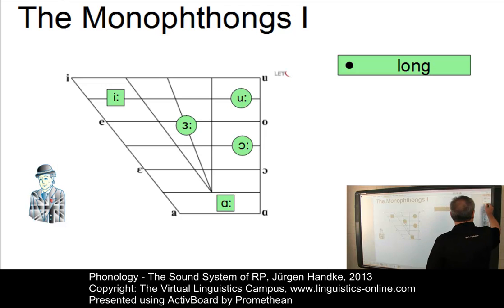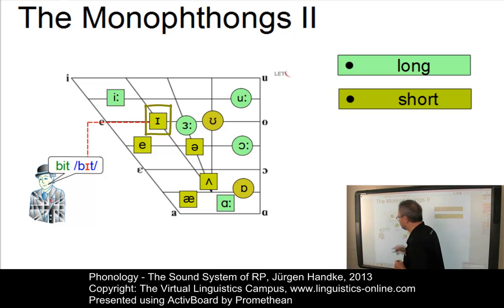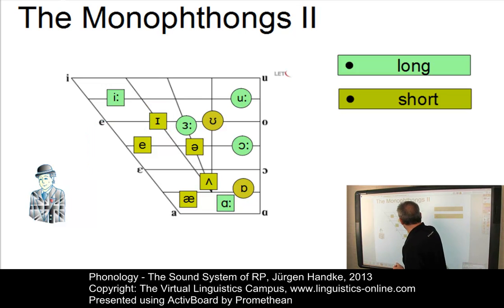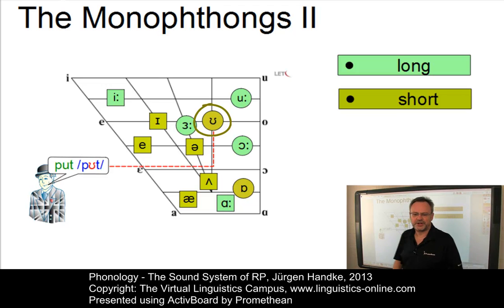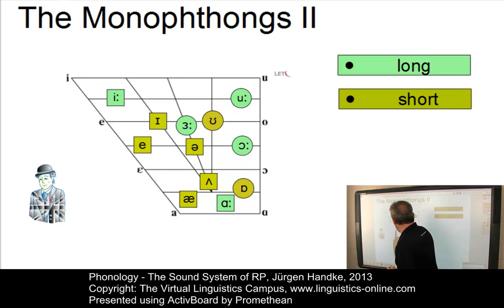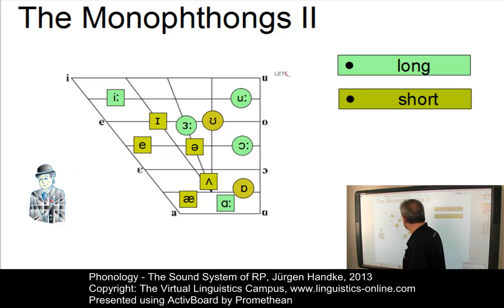Let us now add the short or lax monophthongs. There are two mid-high ones: the short I, as in 'bit,' is not problematic, though sometimes made a bit too high by non-native speakers. Its back counterpart, the short U, as in 'put,' is also relatively unproblematic. The short E, as in 'bet,' is similarly often made too high by non-native speakers of English.